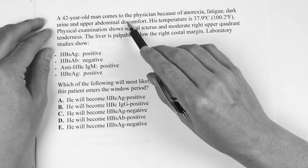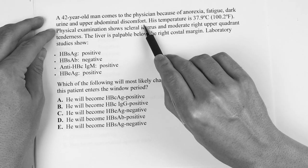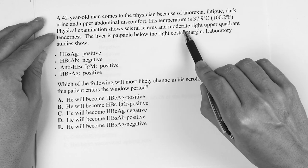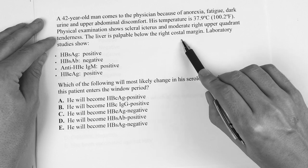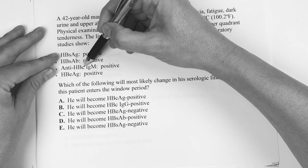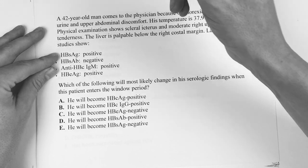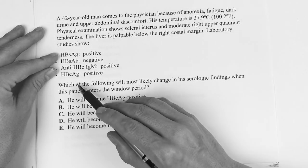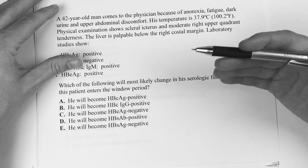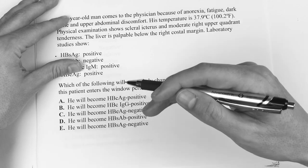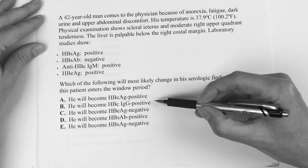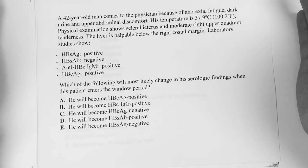It says a 42-year-old man comes to the physician because of anorexia, fatigue, dark urine, and upper abdominal discomfort. His temperature is 37.9, 100.2 Fahrenheit. Physical examination shows scleral icterus and moderate right upper quadrant tenderness. The liver is palpable below the right costal margin. Laboratory studies show the surface antigen, surface antibody, the core antibody IgM, and then the E antigen positive. So put it on pause and see if you can get the correct answer, because there's a trick to this.